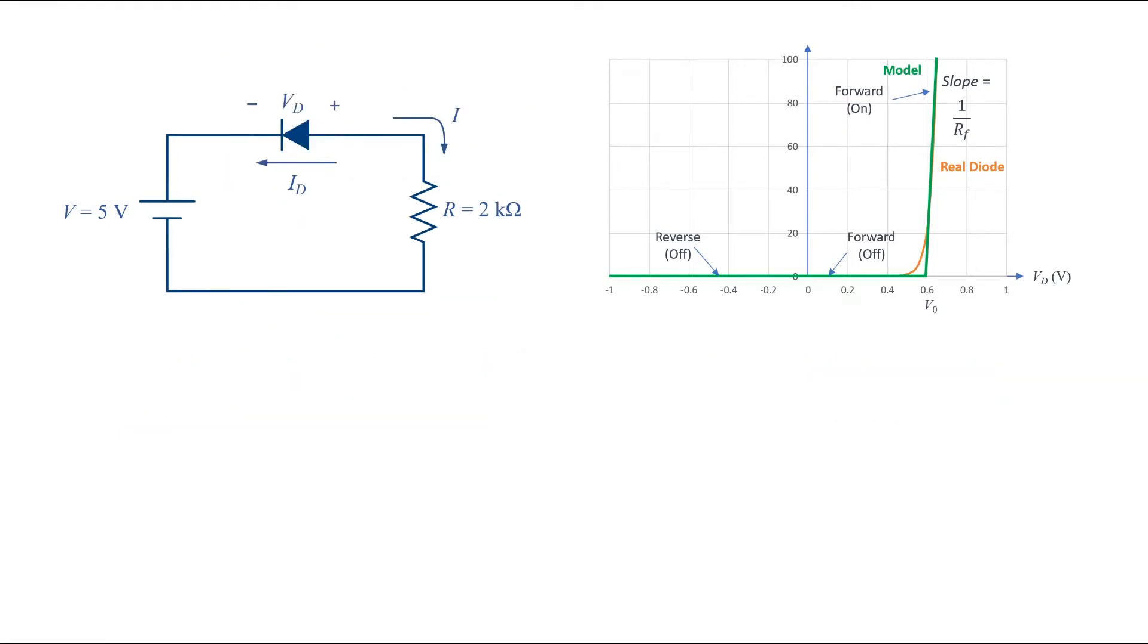When the diode is in reverse bias it is easy. It is an open circuit. The current by definition is 0 and all the applied voltage appears across the diode. So we can write ID equal to 0, and VD equals to the applied voltage, and here equal to minus 5 volts.